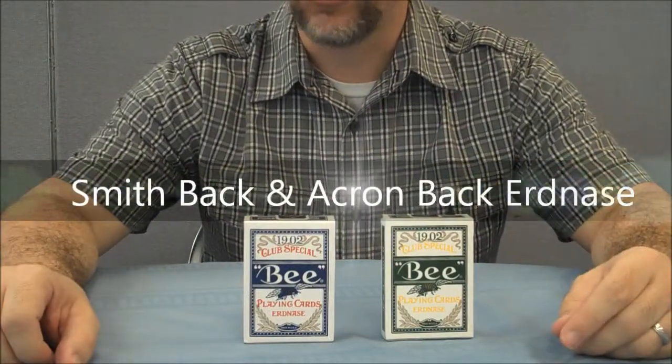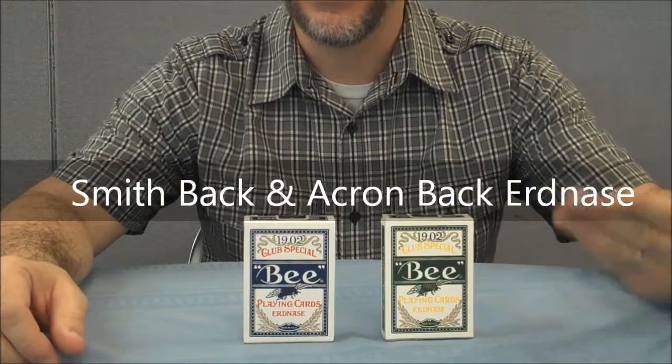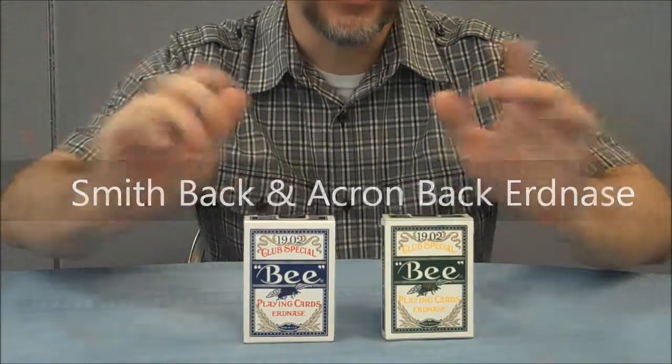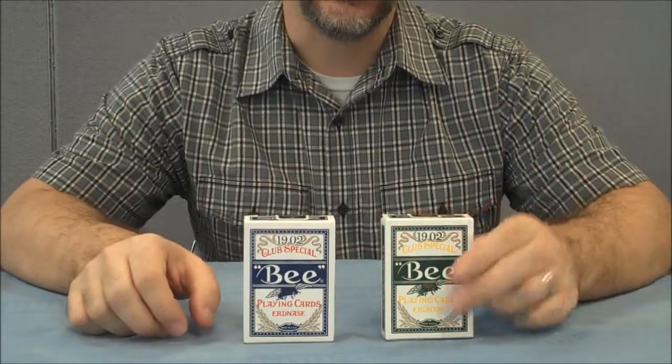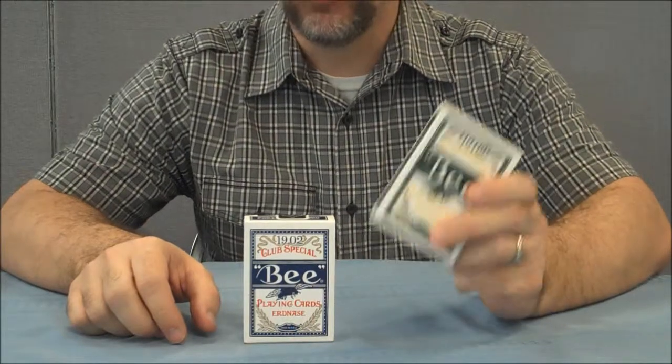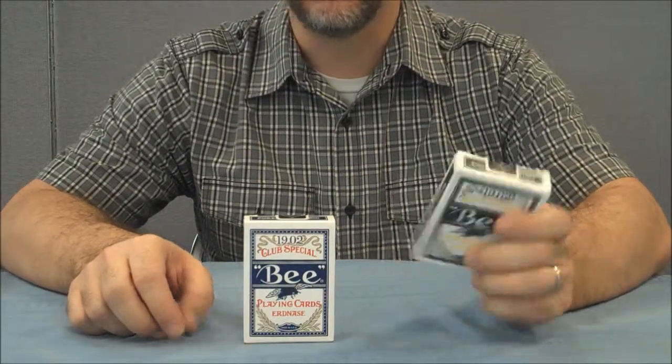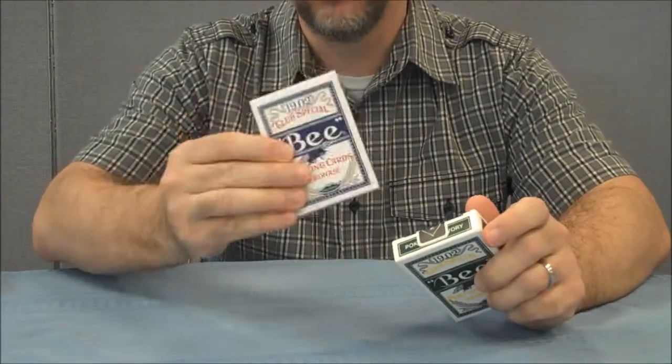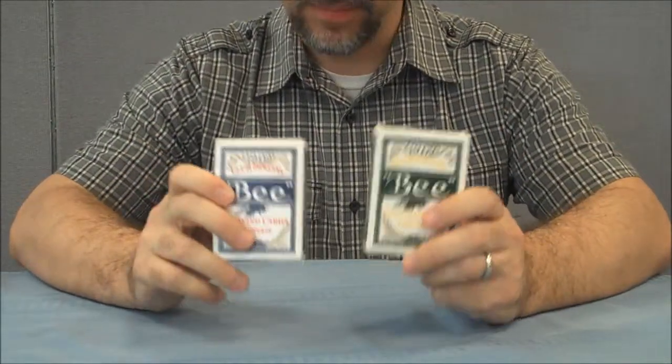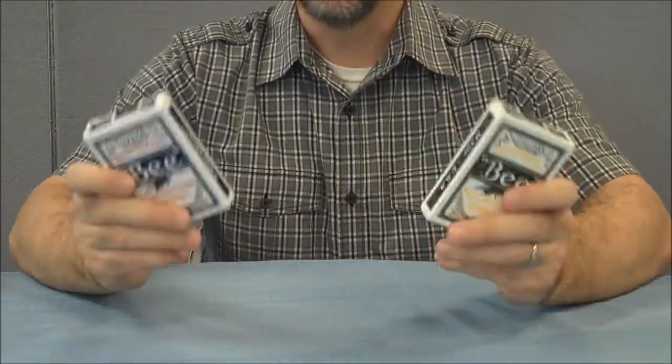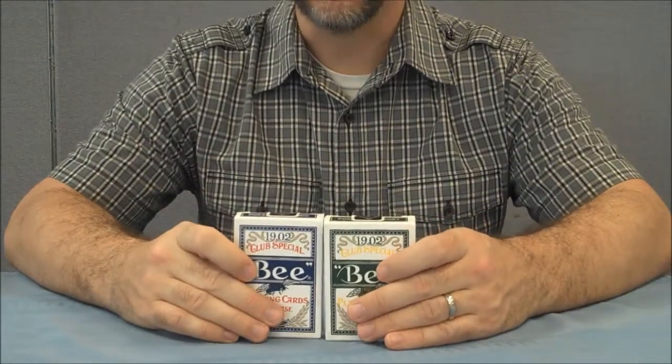Hey everybody, welcome back to Magic Orthodoxy. My name's David and this is a deck review. Actually, there's two deck reviews. Today we're going to look at the Erdnase 1902 Green Acorn Back playing cards and the Smith No. 2 Bluebacks. Both of these decks are from Conjuring Arts Research Center. You can learn more about them at conjuringarts.org.